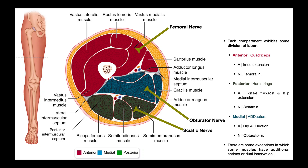You can see those muscles here in green. The hamstring muscle group is composed of three muscles: the lateral biceps femoris muscle, and then the two more medially placed muscles, semitendinosus and semimembranosus. Collectively, the hamstring muscle group is responsible for two main functions: knee flexion and hip extension.